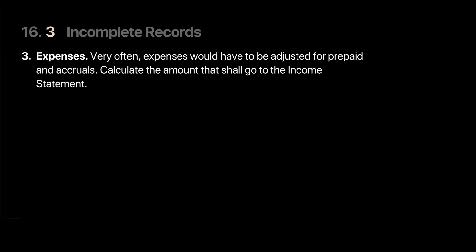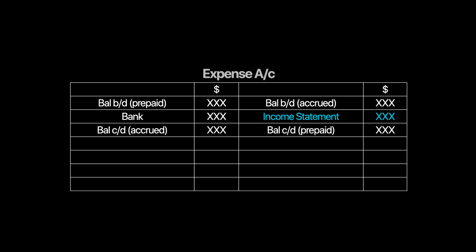Once we've completed the upper half of our income statement — sales and cost of goods sold — step three is to look at expenses. Expenses will have adjustments for prepaid and accruals, and our job is to calculate the actual amount of expenses. A useful tool is an expense account that records all prepaid and accruals. Any prepaid expense is an asset and comes on the debit side; any accrued expense at the start of the year is a liability and goes on the credit side. Closing prepaid and closing accrued expenses are entered similarly.